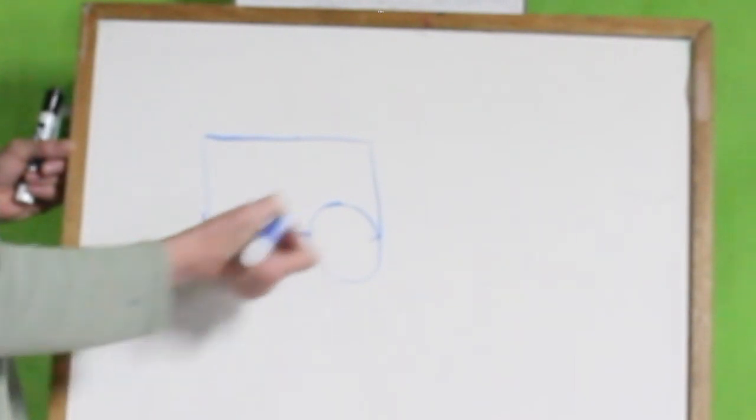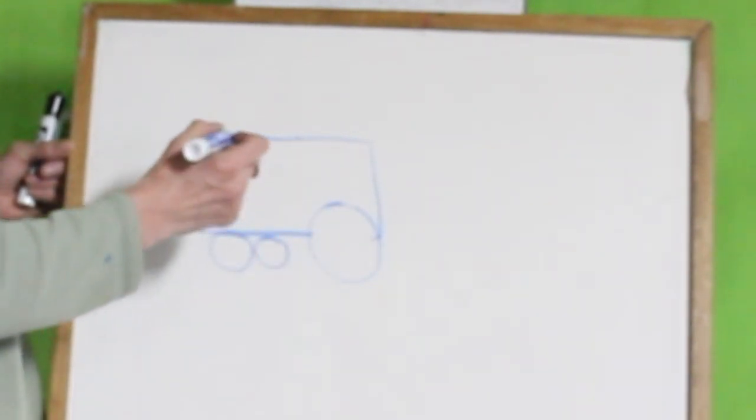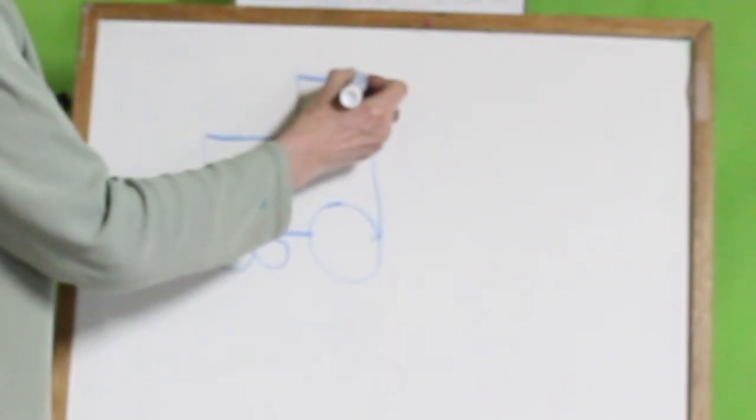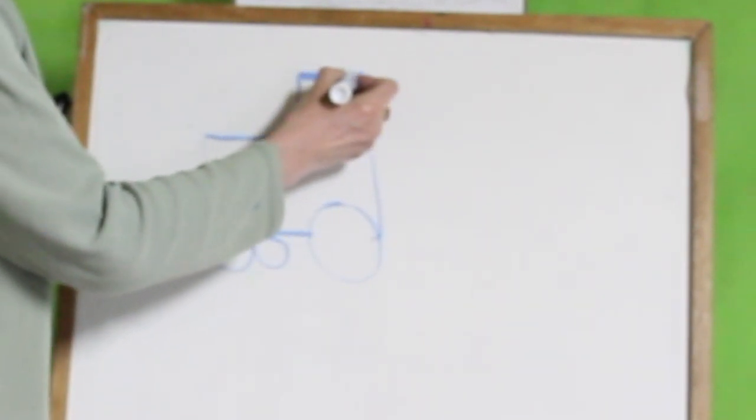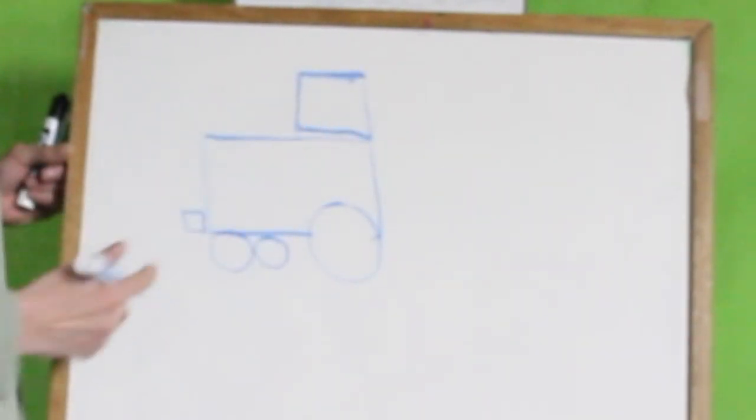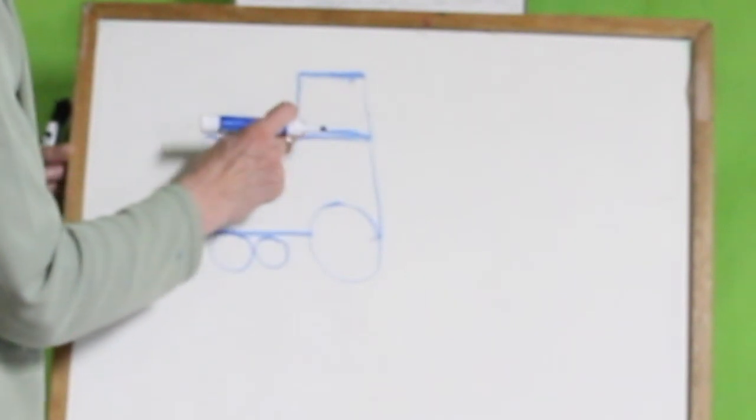Now I'm going to draw a bumper. I'm going to draw the top of the engine with another square. The difference between a square and a rectangle is the rectangle has a long side and a short side. The square, the sides are all the same.